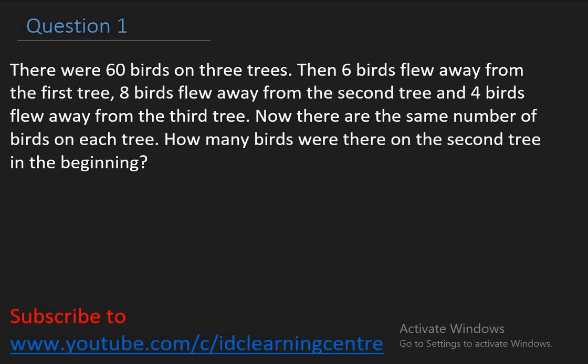There were 60 birds on three trees. Then six birds flew away from the first tree, eight birds flew away from the second tree, and four birds flew away from the third tree. Now, there are the same number of birds on each tree. How many birds were there on the second tree in the beginning?